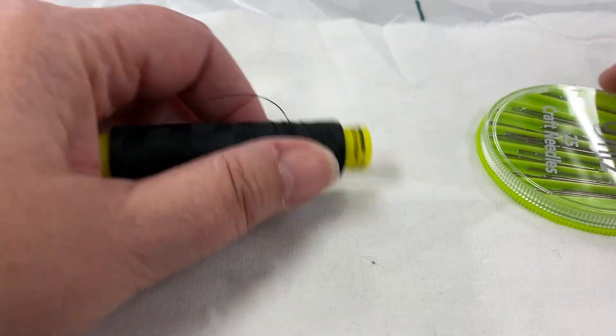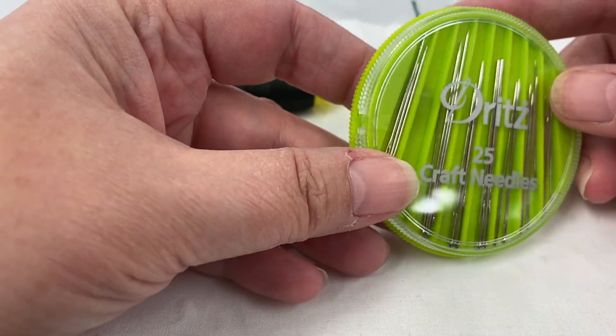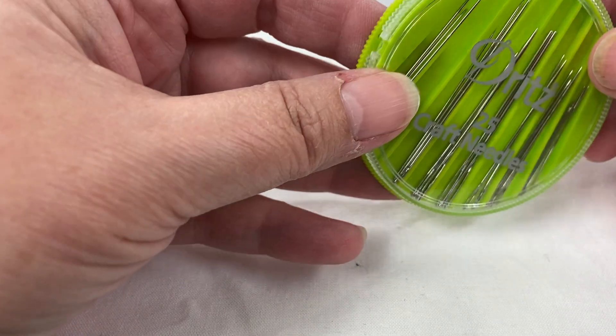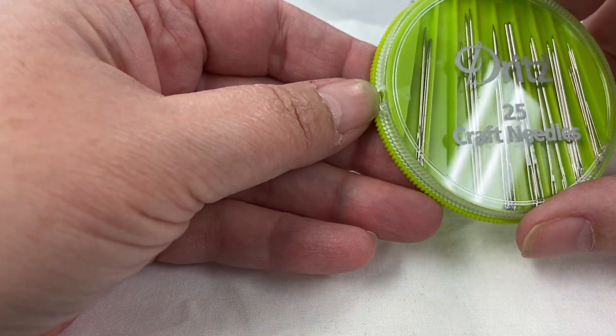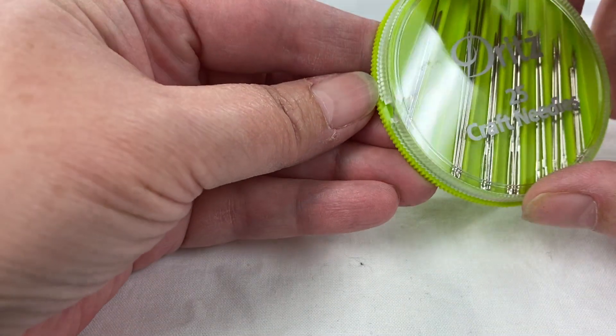You may have bought a package of needles similar to this. This is just a round one, but the assorted pack of needles. What you want to do for most of the hand sewing that you're wanting to do is to land in the medium range on this.